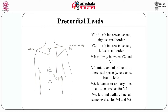V1 is placed at the 4th intercostal space at the right sternal border. V2 is placed at the 4th intercostal space at the left sternal border. V3 is placed between V2 and V4. V4 is placed at the mid-clavicular line at the 5th intercostal space, where the apex is felt. V5 is placed at the left anterior axillary line at the same level as V4.